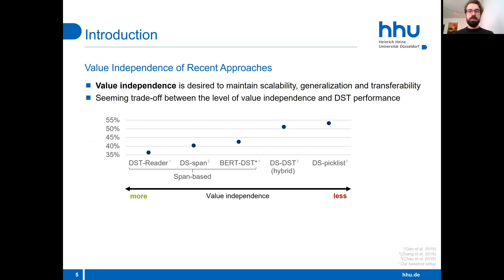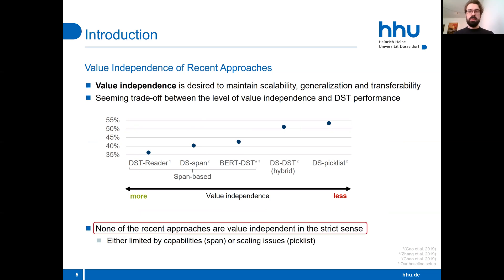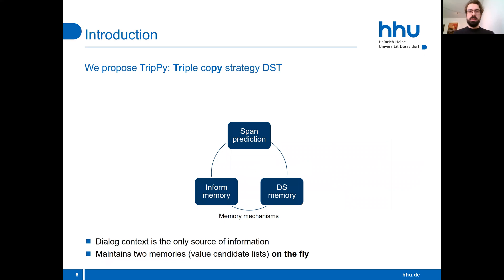Looking at recent approaches, there seems to be a trade-off between the level of value independence and dialogue state tracking performance. Ultimately, none of the recent approaches are value independent in the strict sense. They are either limited by the capabilities of the applied methods, or they have scaling issues. In order to address these issues and improve value independence, we propose TRIPY, Triple Copy Strategy DST.